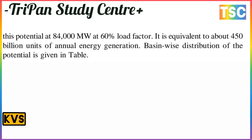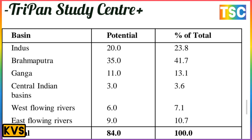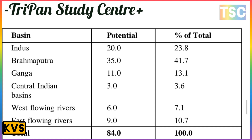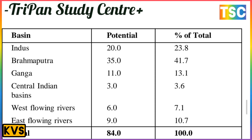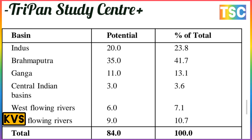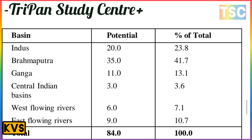The basin-wise distribution of the potential is given in a table. The Indus basin has a potential of 20 and a percentage of 23.8. Brahmaputra has a potential of 35 with a total percentage of 41.7. Ganga has a potential of 11 with a percentage of 13.1. Central Indian basin has a potential of 3 with 3.6 percent. West flowing rivers have a potential of 6 with 7.1 percent, and east flowing rivers 9 with 10.7 percent. The maximum share belongs to Brahmaputra at 41 percent.